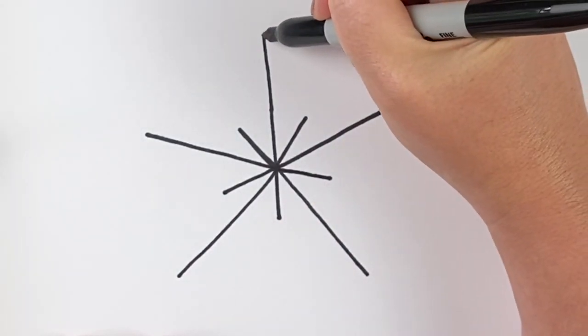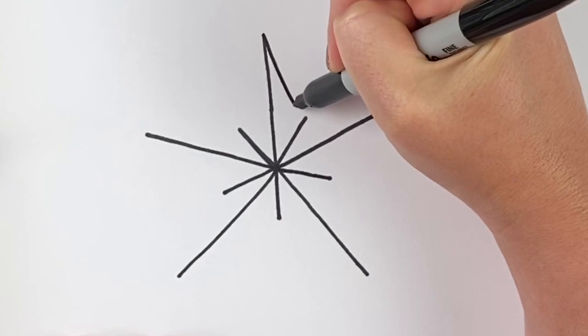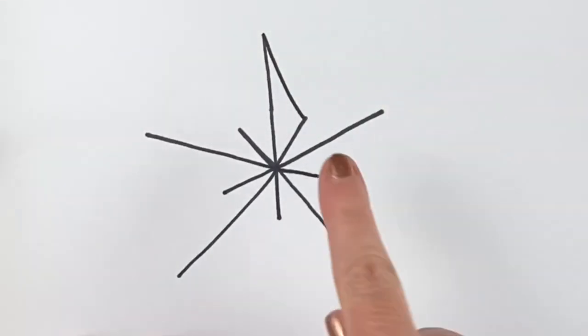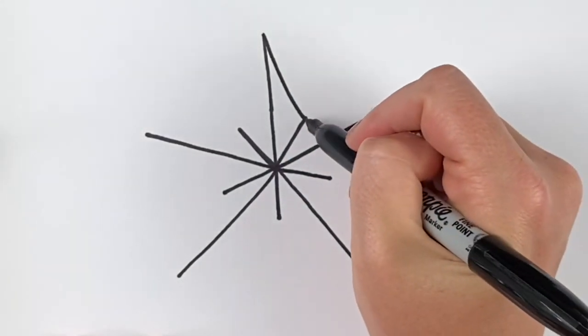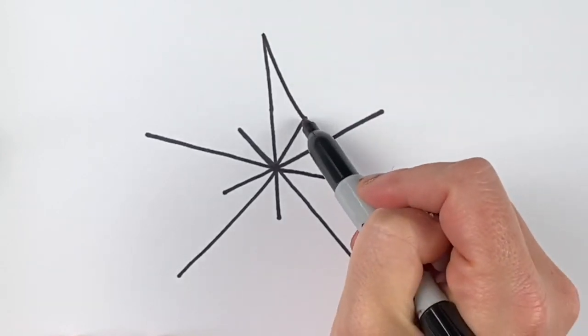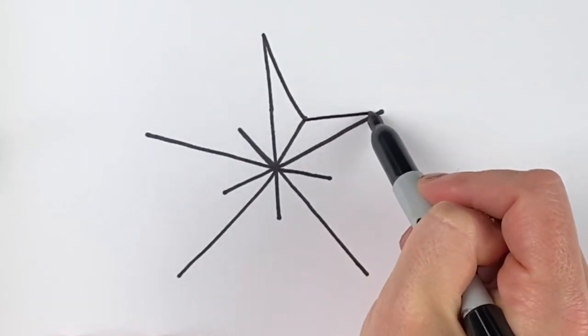We're going to start here at the top, and I'm just going to bring a straight line and meet the short line. Then I'm going to bring a line over from the short line and go up to the tall one right beside it, just like that.